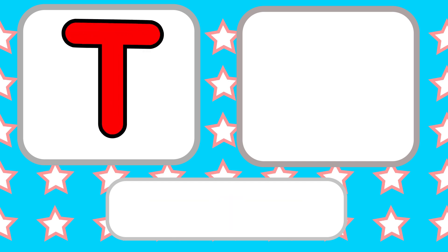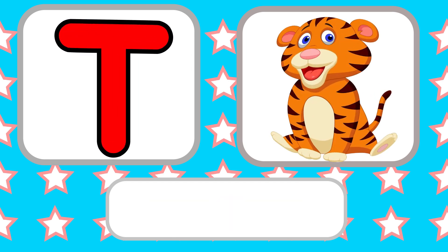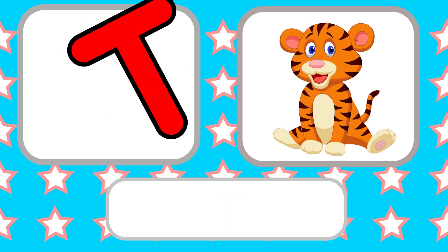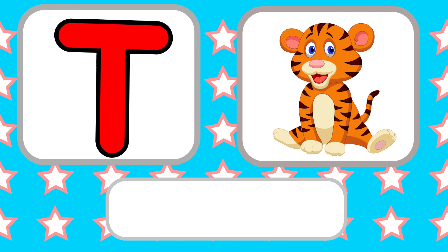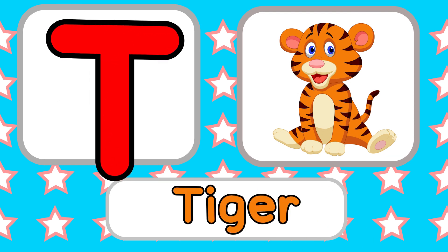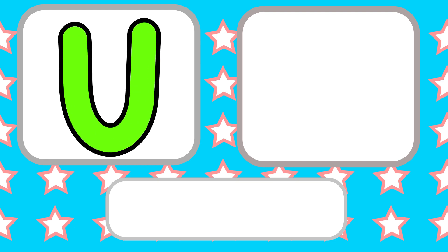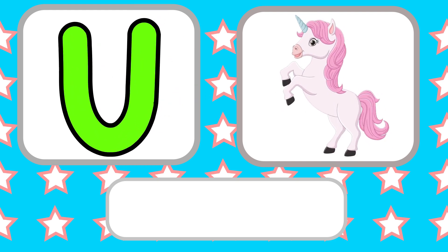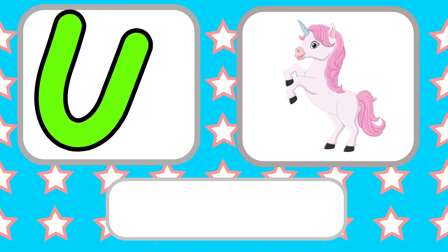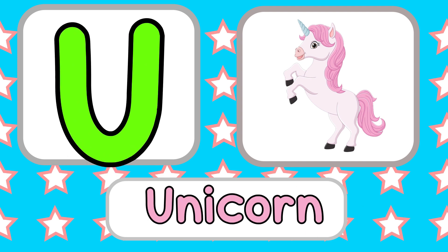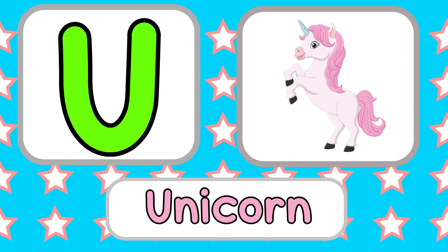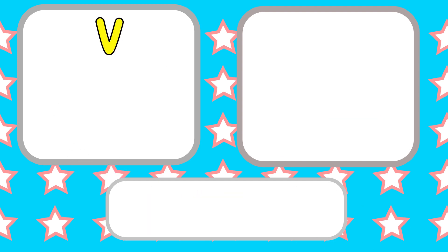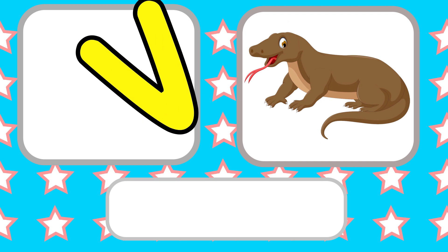S, Snake. T is for Tiger. T, T, Tiger. T, T, Tiger. T, Tiger. U is for Unicorn. U, U, Unicorn. U, U, Unicorn. U, Unicorn. V is for Vulture.